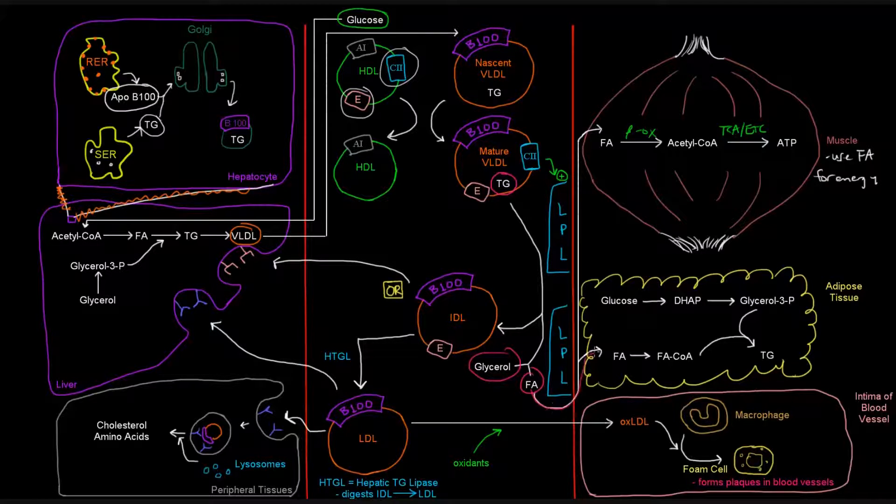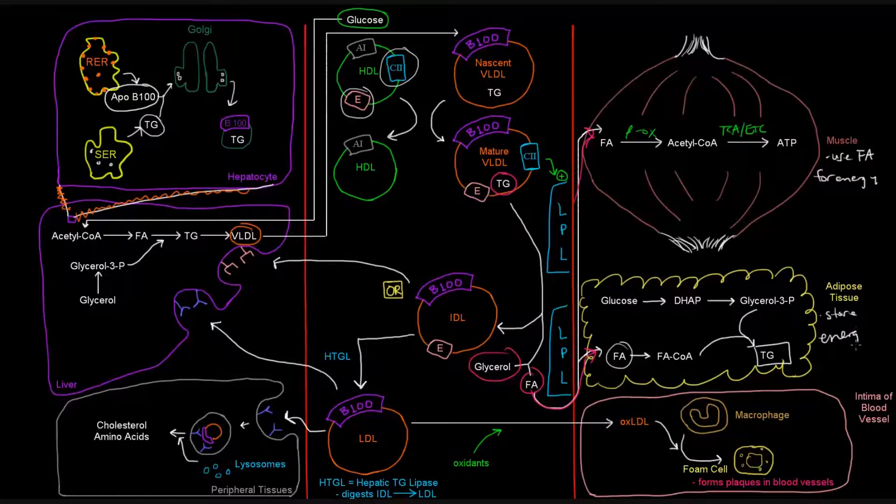Fatty acids were taken up by the adipose tissue and the muscle tissue. So in the muscle, they're used for energy, and in the adipose tissue, the fatty acids end up being stored in triglycerides. So these store the energy.